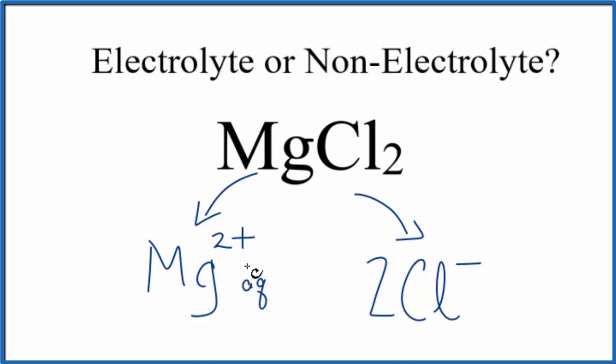We want to write Aq after it to show that it's aqueous, dissolved in water. So in answer to our question, MgCl2 is an electrolyte. In fact, because it dissociates completely into its ions, we consider it a strong electrolyte.